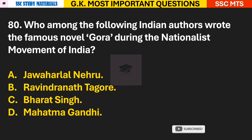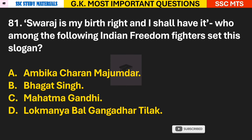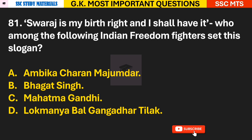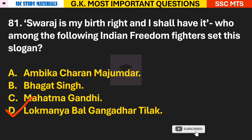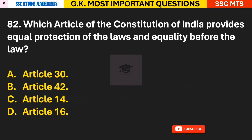Question 80: Which Indian author wrote the famous novel 'Gora' during the nationalist movement of India? Answer B — Rabindranath Tagore. Question 81: 'Swaraj is my birthright and I shall have it' — who among the following Indian freedom fighters said this slogan? Answer D — Lokmanya Bal Gangadhar Tilak.